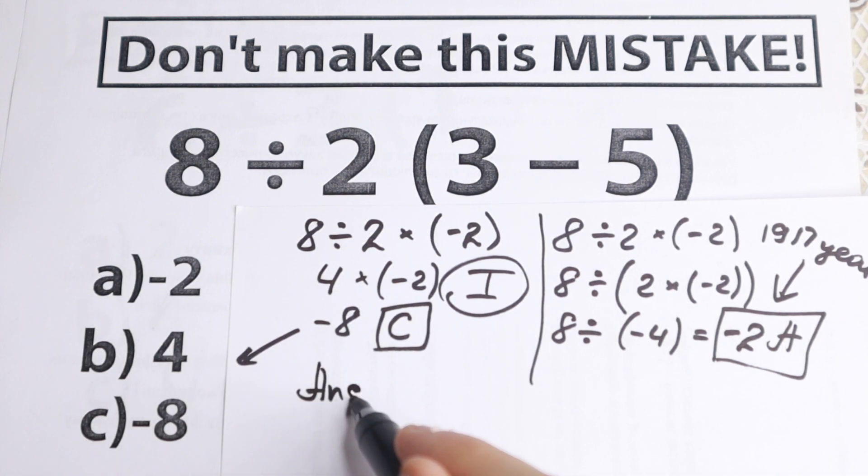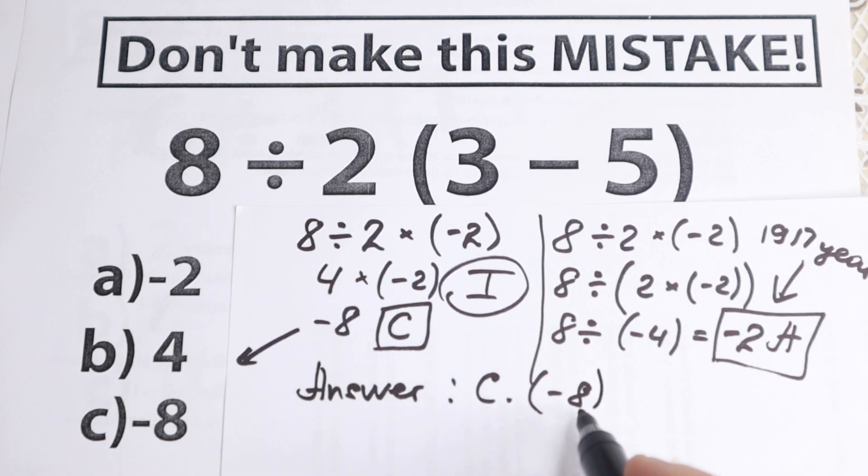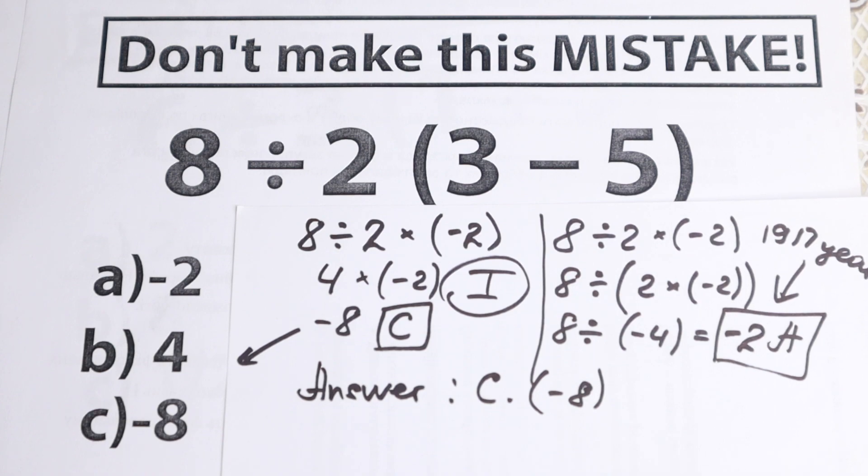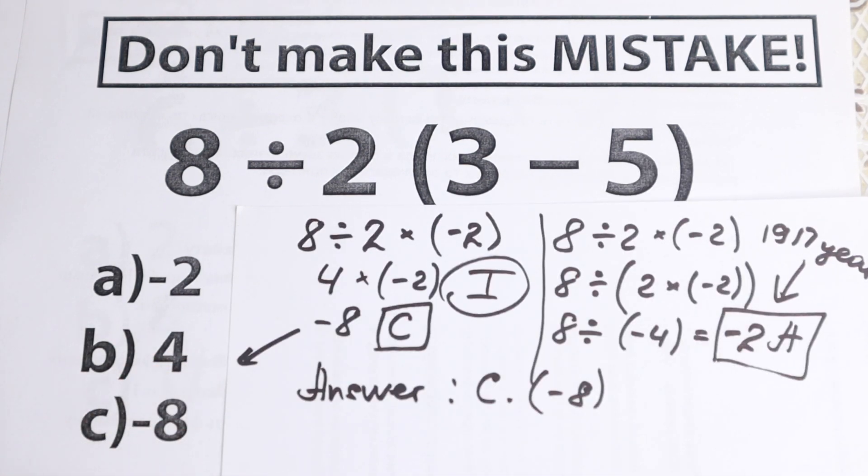I write it right here. But 100 years ago, we will have like minus 8 option C. This is minus 8. We learned about BODMAS and PEMDAS order right here. And I hope you enjoy and understand this explanation.